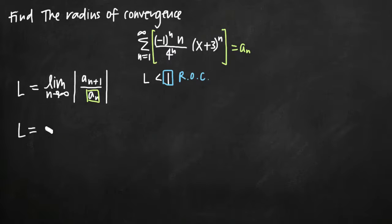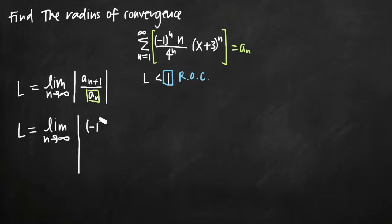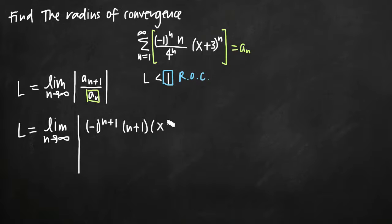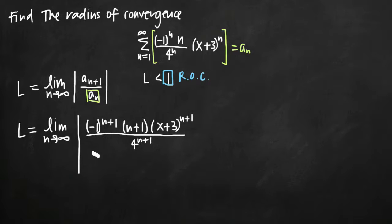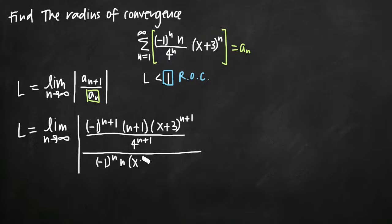So L is equal to the limit as n goes to infinity of the absolute value of a sub n plus 1. Plugging in n plus 1, we get negative 1 raised to the n plus 1 power, times n plus 1, times x plus 3 raised to the n plus 1 power, all divided by 4 to the n plus 1. Then we divide that whole thing by our original series a sub n: negative 1 to the n times n times x plus 3 raised to the n, all divided by 4 to the n.